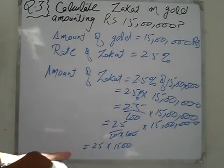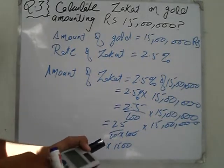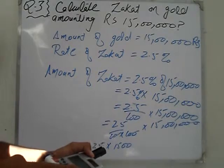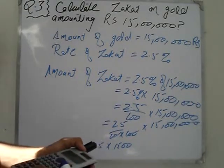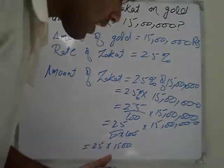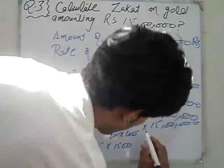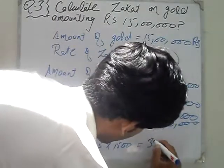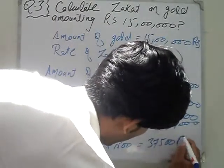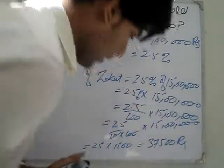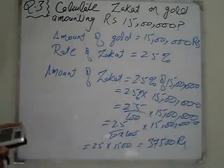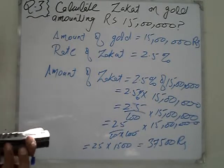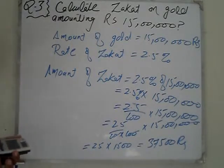25 into 15 gives us 37,500. The amount of Zakat is Rs. 37,500.